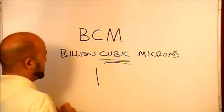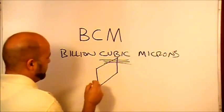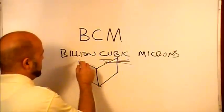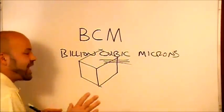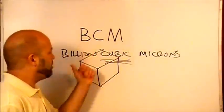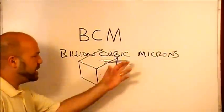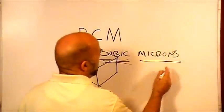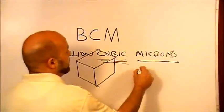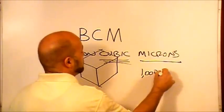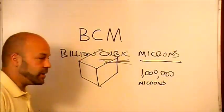So let's prepare ourselves for that. Let's make a little cube here. At some scale, a BCM is going to look something like that: 1 billion cubic microns. Now what is a micron? A micron is 1 millionth of a meter. There are 1 million microns in a meter.